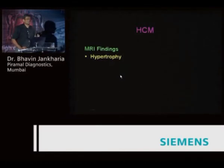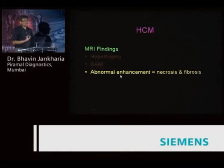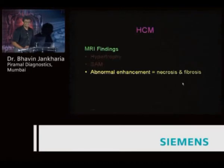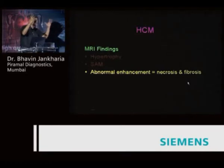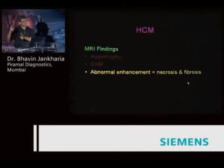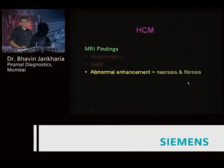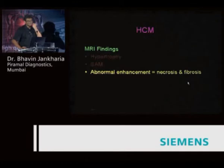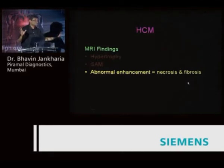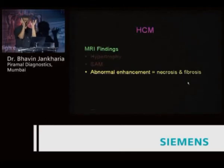We now do MRs in patients with hypertrophic cardiomyopathy because there is a lot of data showing that abnormal enhancement in the hypertrophied myocardium suggests necrosis and fibrosis, which correlates directly with the incidence of sudden cardiac death. If there is a lot of fibrosis and necrosis, the chance of a sudden cardiac death event is high. The patient needs an AICD right away. EP physicians ask us specifically about the extent of fibrosis to decide whether to implant a defibrillator.